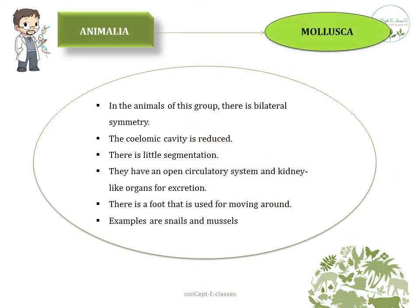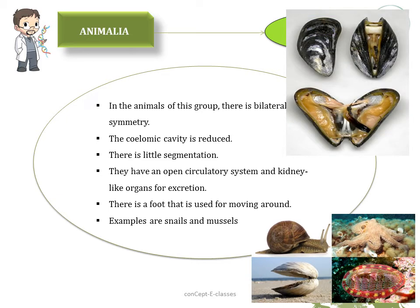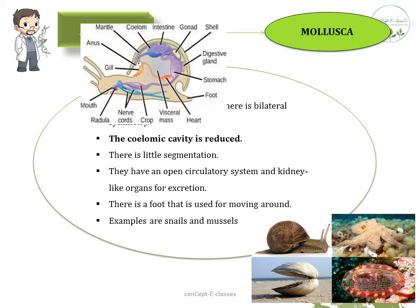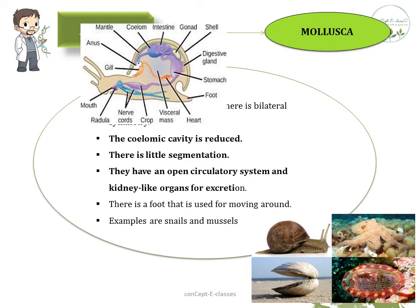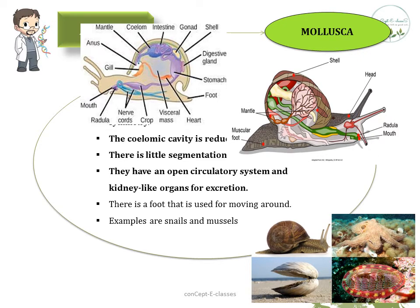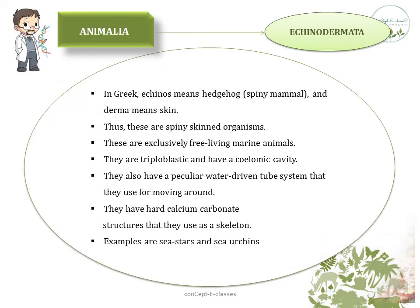The seventh division is Mollusca. Animals in this group are also bilaterally symmetrical. The coelomic cavity is reduced, and there is very little segmentation. They also have an open circulatory system and kidney-like organs for excretion. In some molluscs, there is a hard shell made of calcium carbonate covering the soft body. The most common examples of molluscs are snails.